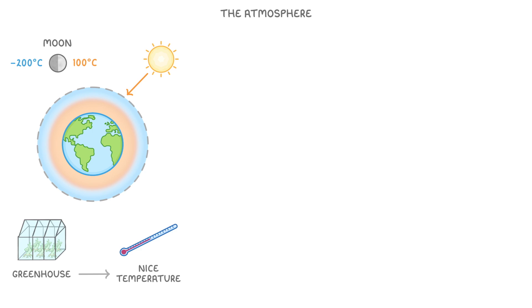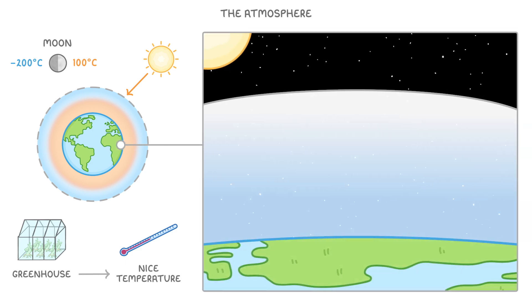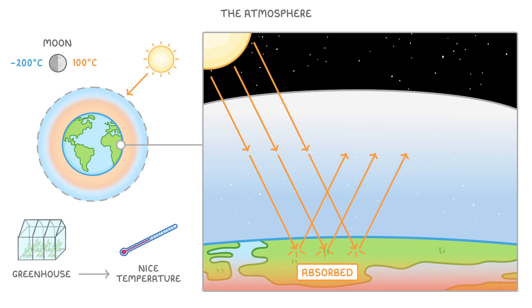To understand how the atmosphere regulates our temperature like this, let's zoom in to the surface of the earth. As the sun's heat energy comes down towards the earth in the form of light rays, it passes through the atmosphere and hits the surface of the earth. Some of this energy is absorbed and heats up the ground, but most of it is either re-emitted or reflected back into the atmosphere towards space.